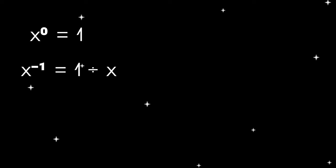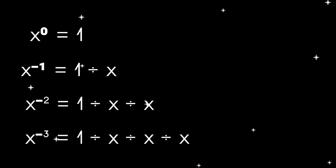And inversely so, x raised to the power of negative 1 equals 1 divided by x. X raised to the power of negative 2 equals 1 divided by x divided by x. X raised to the power of negative 3 equals 1 divided by x divided by x divided by x, and so on and so forth.